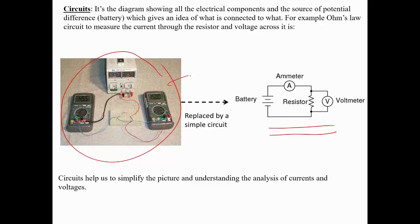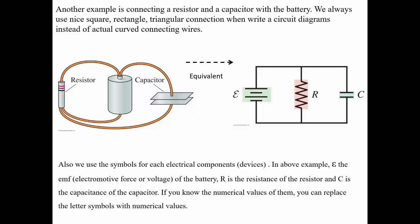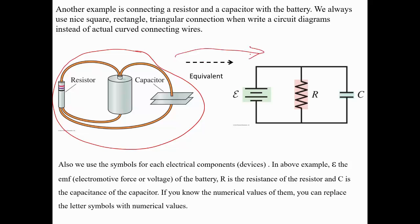Everything in the circuit can be written as a simple circuit diagram: you have a battery as the power supply, a sample which is a resistor connected in series with an ammeter, and the voltmeter connected across the sample. Similarly, an actual lab circuit with a capacitor, resistor, and battery can be represented by a simplified electrical circuit diagram.